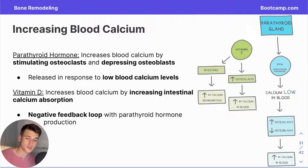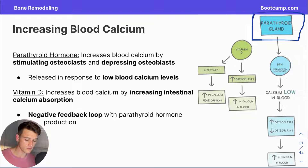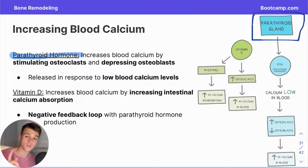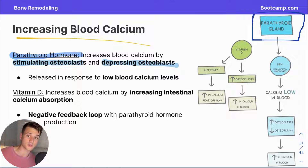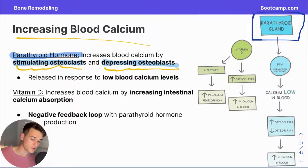Now we can discuss how vitamins and hormones control the amount of calcium free to be stored in bone or flow through the blood. To increase blood calcium, we look to the parathyroid gland and parathyroid hormone. Parathyroid hormone does two key things: it stimulates osteoclasts and depresses osteoblasts. Stimulating osteoclasts breaks down bone and releases stored calcium into the bloodstream. Depressing osteoblasts means less calcium is taken out of the bloodstream to be stored in new bone. Parathyroid hormone is therefore released in times of low blood calcium levels.